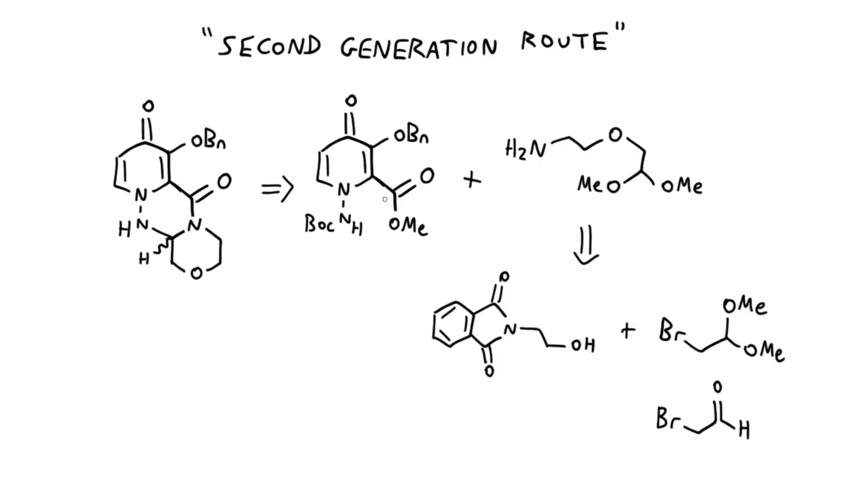I'll briefly mention what is called the second generation route in the OPRD paper. Starting from the Boc-protected methyl ester, an alternative method they devised was to combine this building block with this aliphatic amine. The amine was derived from phthalimide-protected 2-aminoethanol and the dimethyl acetal of bromoacetaldehyde. Bromoacetaldehyde itself is no good to handle—it's very reactive, likes to polymerize, and is a terrible lachrymator—but the dimethyl acetals and ethyl acetals are readily available and serve as a useful masked aldehyde equivalent.